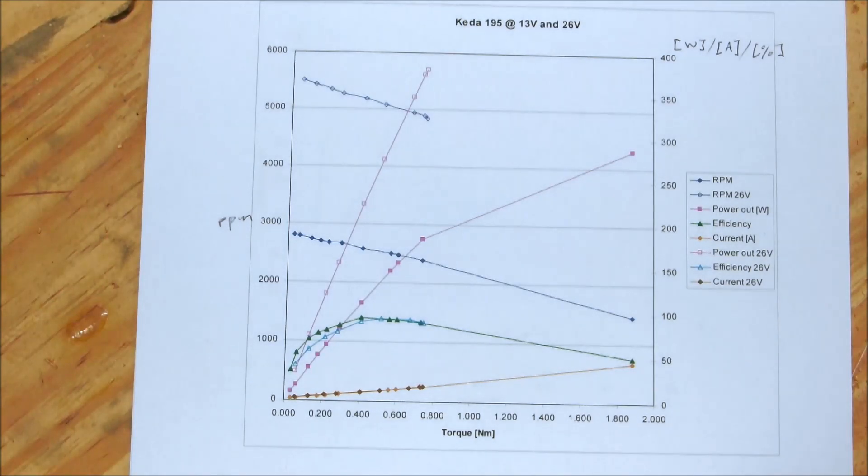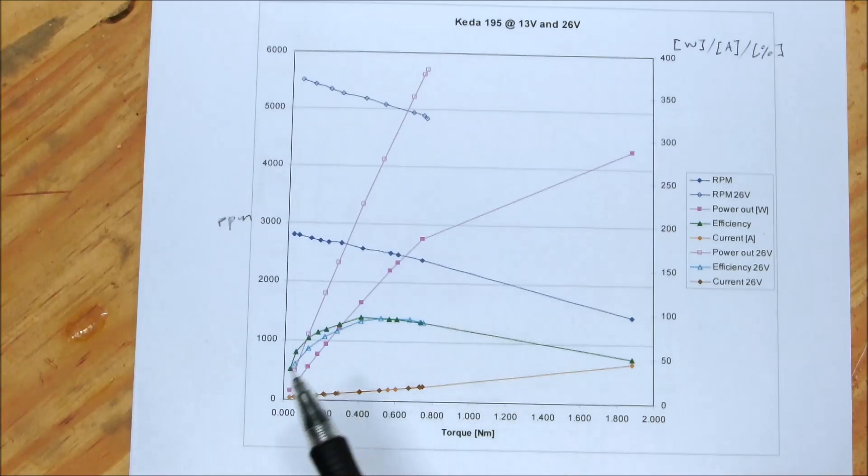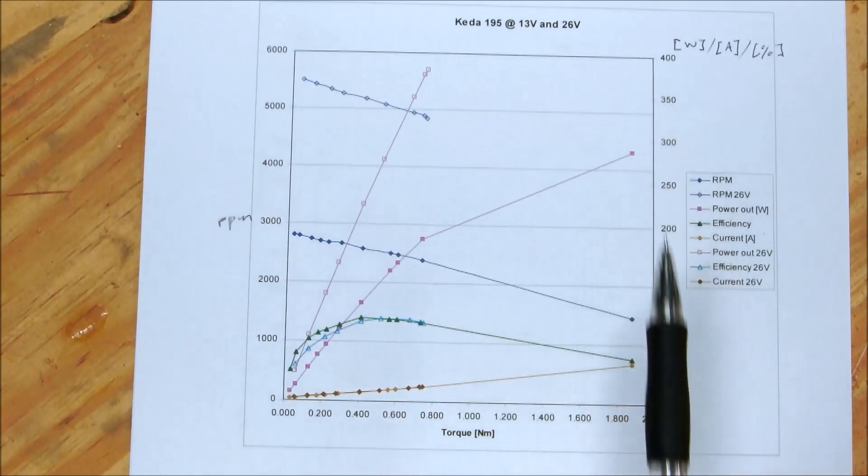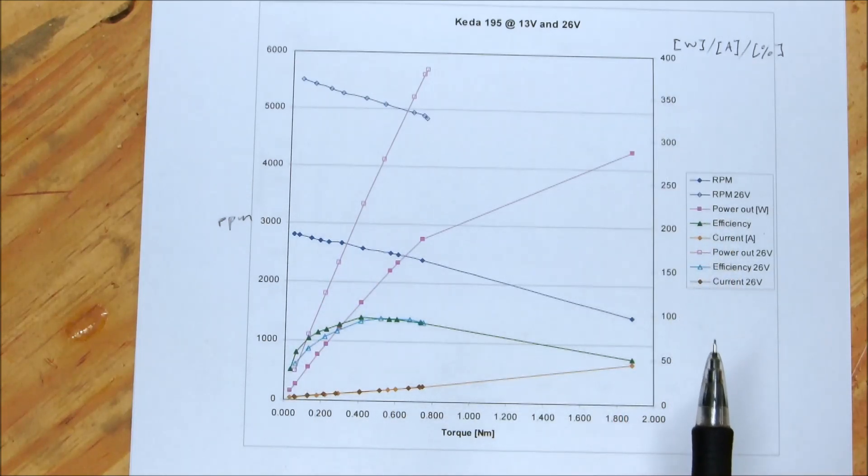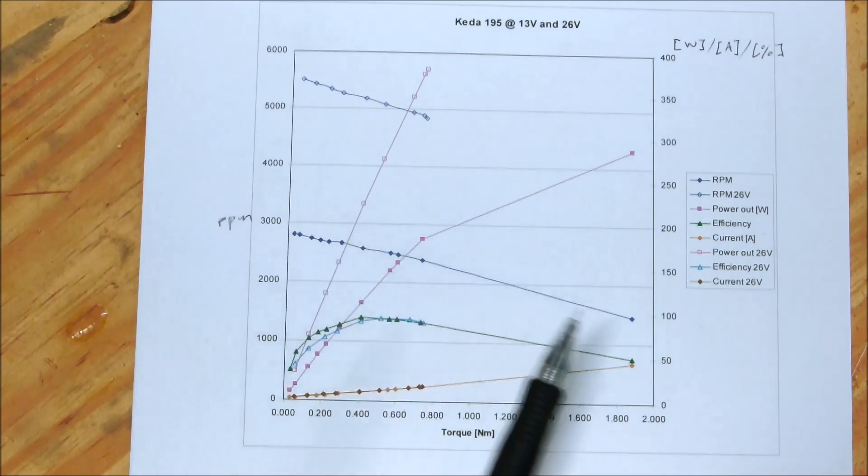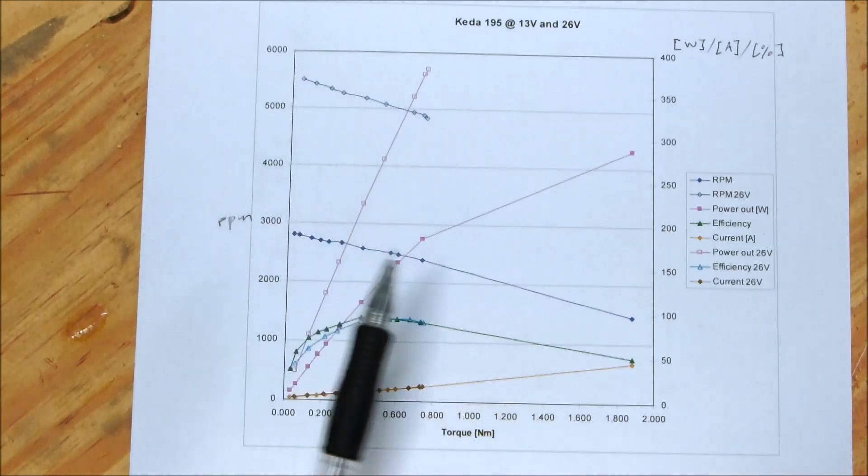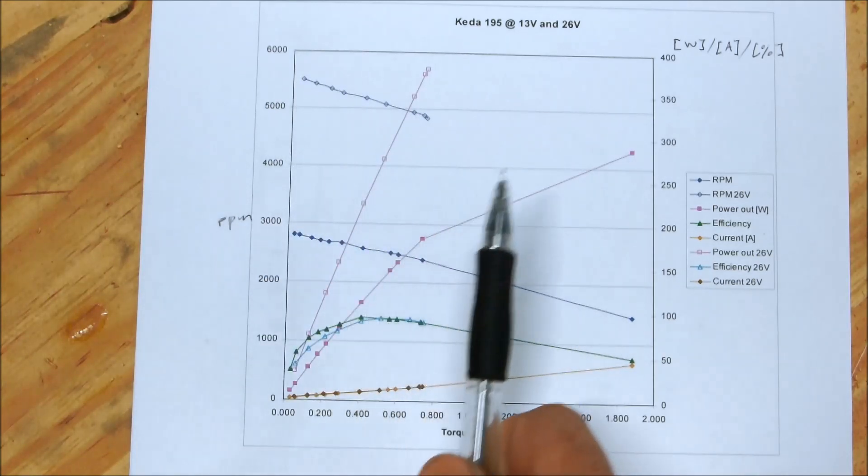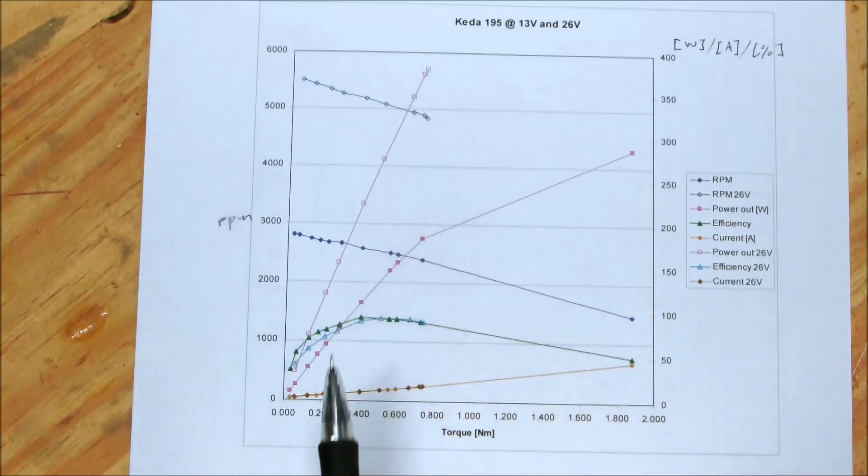Right, here are the results for two sets of tests, one at 13 volts the other at 26 volts. Torque on the X axis, speed on the Y axis, and then on this Y axis power, current and efficiency. The current for both tests lie on the same curve as you'd expect. Efficiency follows the typical curve expected of a constant voltage graph. And then there you can see the speed, 26 volt and 13 volt curves, and then power 13 volt and 26 volt.